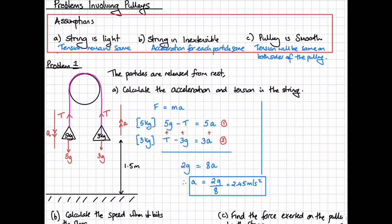To calculate the tension in the string, we use equation number two. Substituting A equals 2.45: T minus three G equals three times 2.45. Rearranging gives tension equal to 36.75 Newtons.